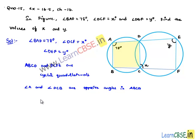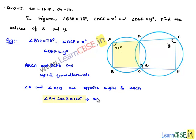We know the sum of opposite angles in a cyclic quadrilateral is equal to 180 degrees. Therefore, angle A plus angle DCB equals 180 degrees. Since angle A is 78 degrees, we get angle DCB equal to 180 minus 78, which is 102 degrees.